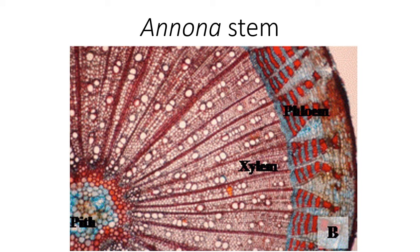This is actually an Anona stem where you can see here — this portion is actually primary xylem, this is newly formed secondary xylem, somewhere here is cambium, and here you can see a small patch. This small patch throughout is actually phloem, and this part is the cortex. As this goes to the next year, it will continuously develop and there will be increase in the thickness of the stem.